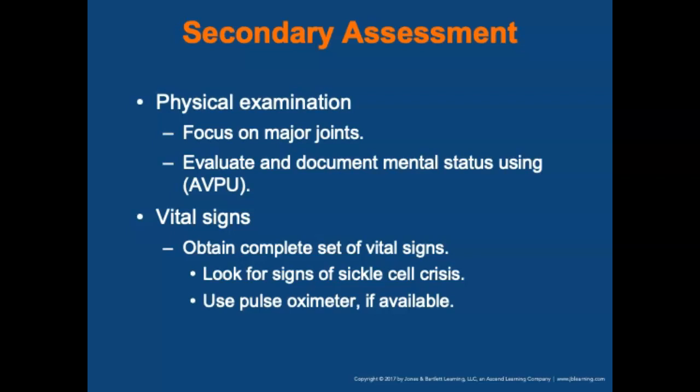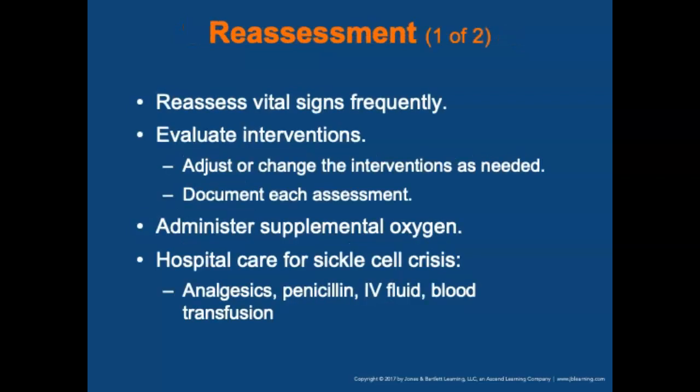In the secondary assessment, perform a systematic exam, focusing on major joints where cells could congregate. Evaluate and document mental status using the AVPU scale. Obtain a complete set of vitals including oxygen saturation. Normal sickle cell crisis vital signs will include normal to rapid respirations, weak rapid pulse, pale clammy skin, and low blood pressure. Use a pulse oximeter if available, though readings may be inaccurate due to the patient's anemic state. Reassess vital signs frequently, noting changes in mental status and whether ABCs are intact. Adjust interventions as needed and document each assessment, findings, and the time.